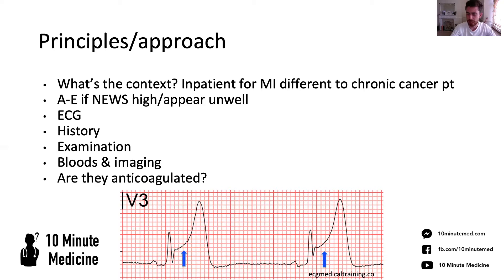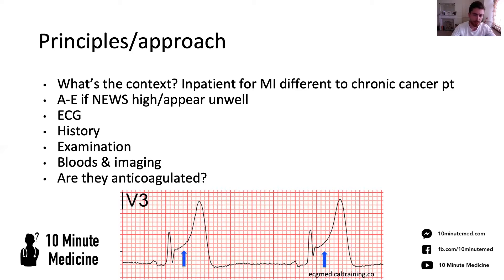When you're on the phone asking for the observations, chest pain — like a tachycardia — is always a good reason to ask for an ECG. We're going to talk about the approach you take when you take your history and do your examination, how to direct those, and how to think about which bloods you might want to request, rather than just ordering every possible blood test. Always think about whether they're anticoagulated, because inpatient PEs are too common.